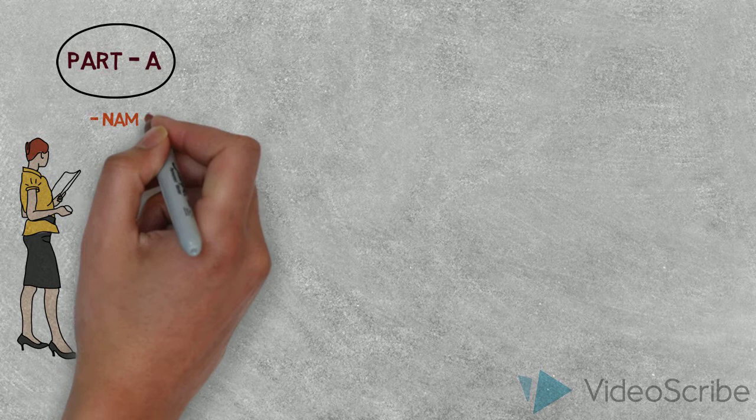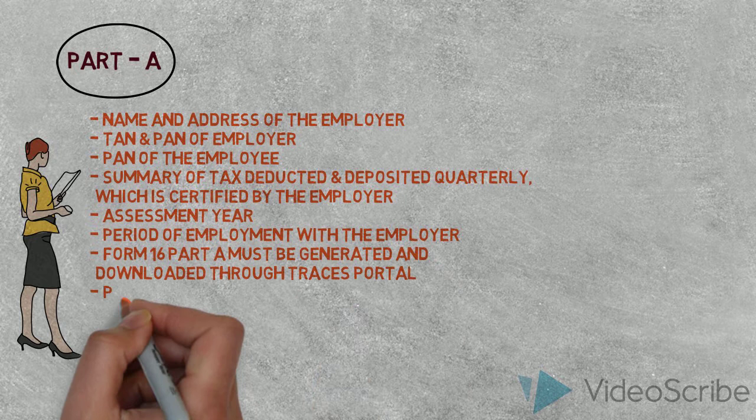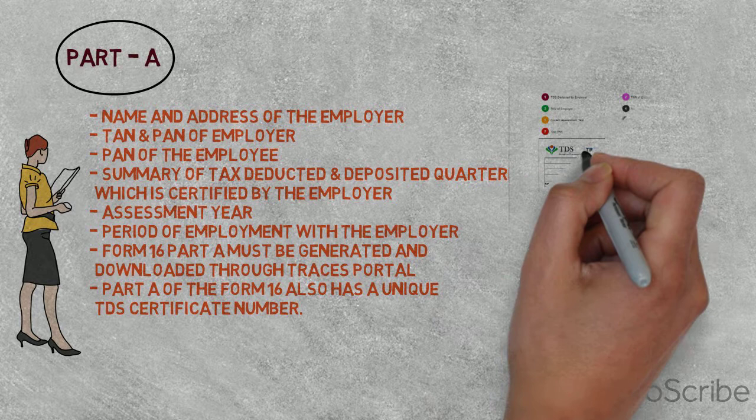Part A includes: name and address of the employer, TAN and PAN of the employer, PAN of the employee, summary of tax deducted and tax deposited quarterly, assessment year, period of employment with the employer, and a unique TDS certificate number.